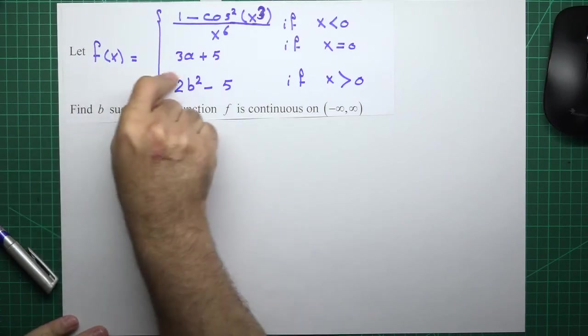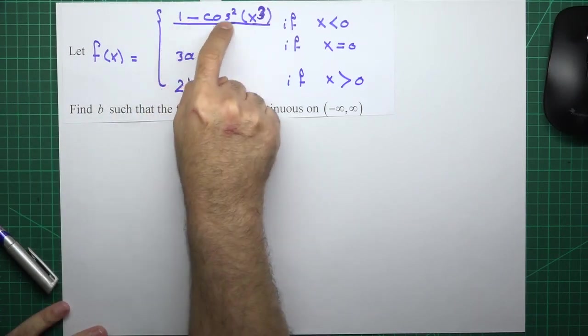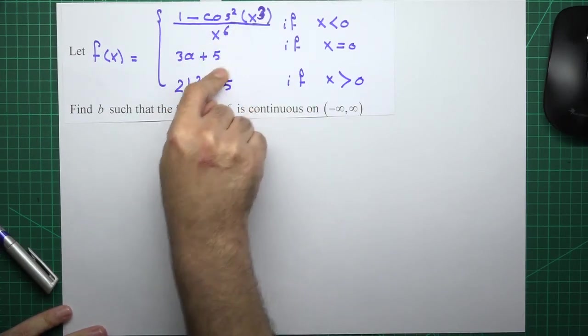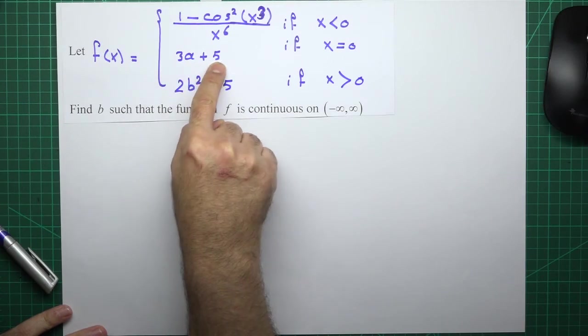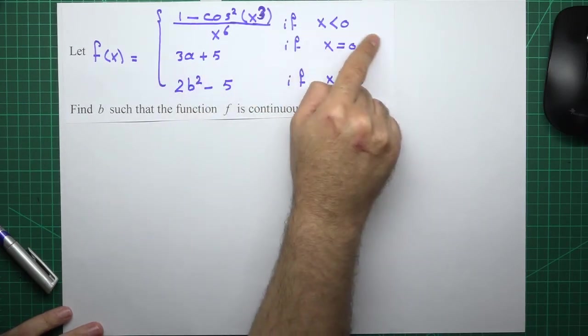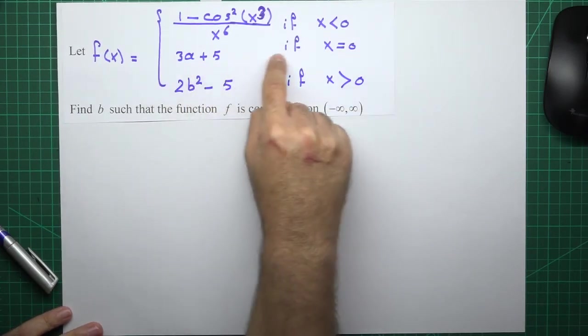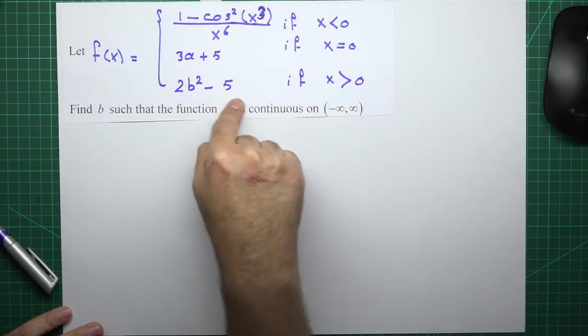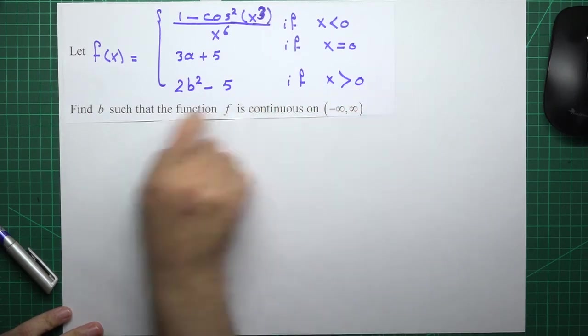Let f(x) equals: (1 minus cosine squared of x cubed) over x to the 6, if x less than 0. 3a plus 5, if x equals 0. 2b squared minus 5, if x is greater than 0.